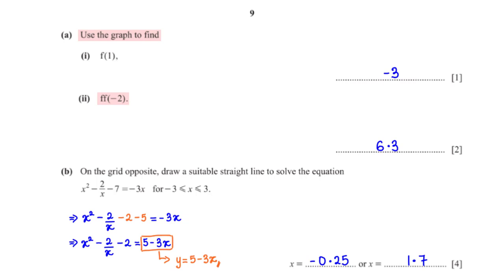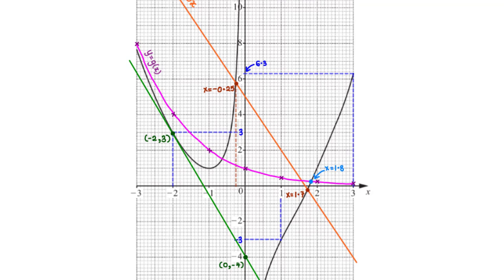Use the graph to find f(f(negative 2)). First, find f(negative 2): mapping x = negative 2 on the graph gives y = 3. So f(negative 2) = 3. Now find f(3): mapping x = 3 gives y = 6.3.